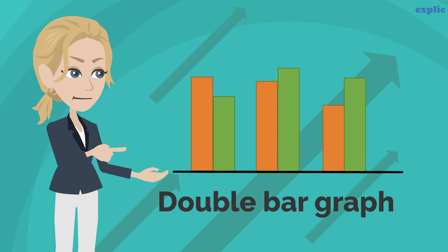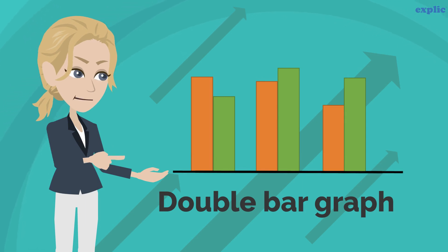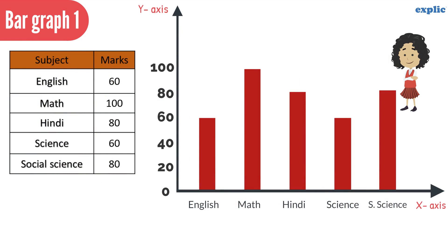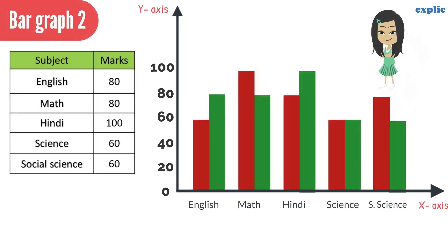Let's understand the use of a double bar graph with an example. Sarah has created a bar graph showing the marks she obtained in different subjects out of 100. In a similar way, Sia has also created another bar graph for her marks using the same X and Y axis.